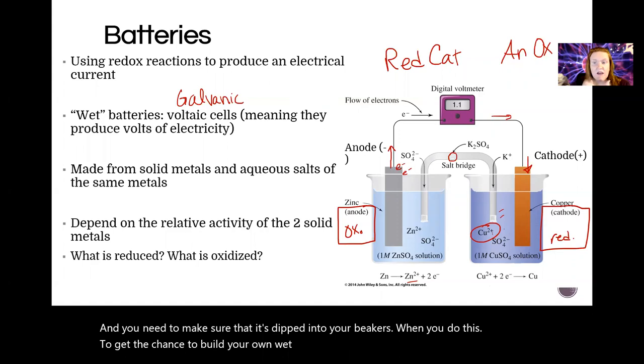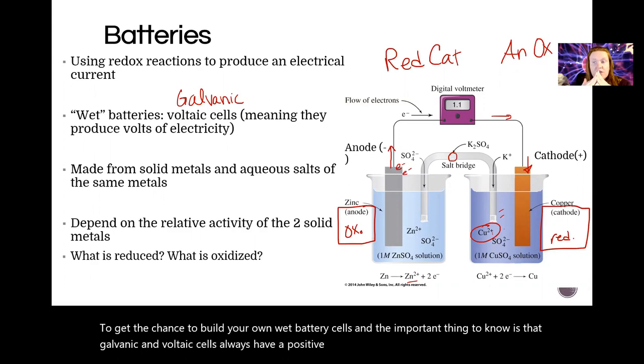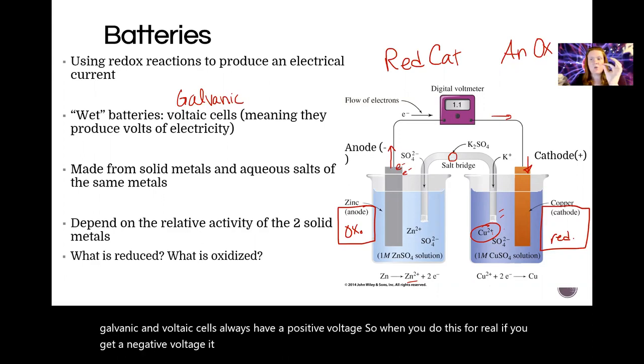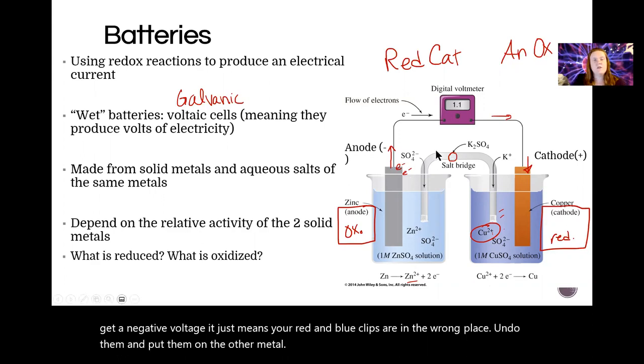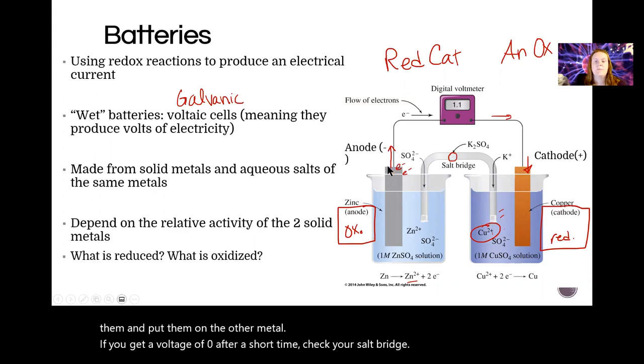The important thing to know is that galvanic and voltaic cells always have a positive voltage. So when you do this for real, if you get a negative voltage it just means your red and blue clips are in the wrong place. Undo them and put them on the other metal. If you get a voltage of zero after a short time, check your salt bridge.